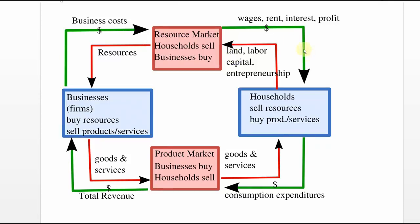On the bottom side of this diagram we're looking at the product market. This is where the goods and services produced by businesses are exchanged for money from households. The goods and services come from businesses into the market, people buy them and take them home. The households give the money they earned from selling their land, timber, or talents in the product market to the businesses — and that comes back to businesses as what we call total revenue.